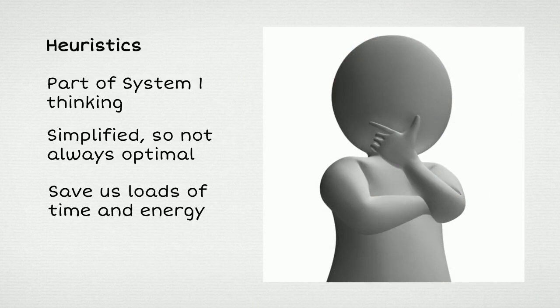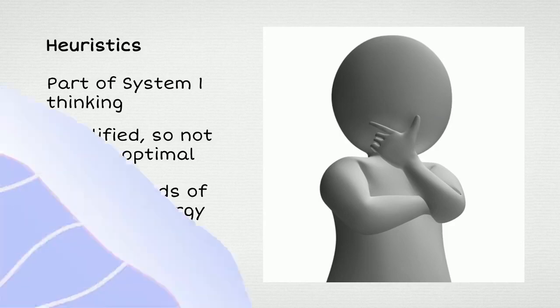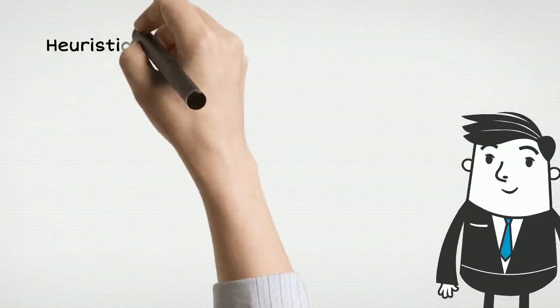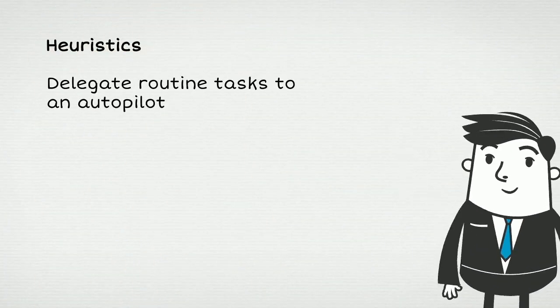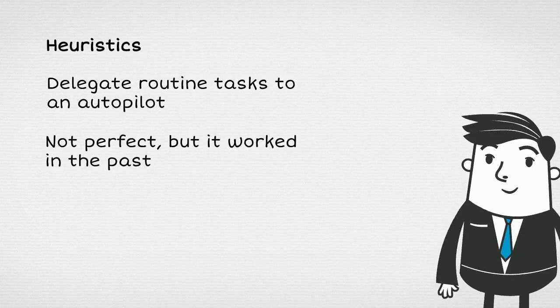However, they also save us loads of time and energy. You don't want to use System 2 every time you make a decision. That would quickly overload your brain, making your life impossible. So you need to delegate routine tasks to an autopilot, which in this case is your System 1 that is full of simplified heuristics. They are not perfect, but they worked in the past, so chances are they are good enough.